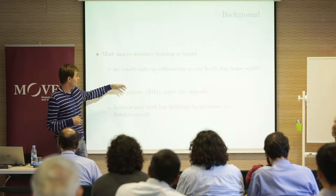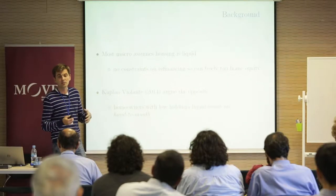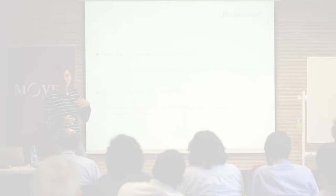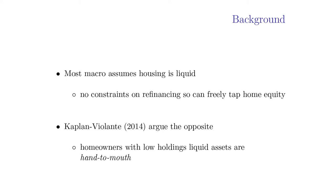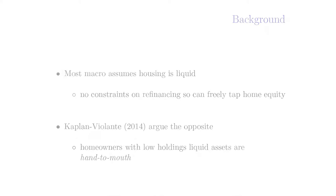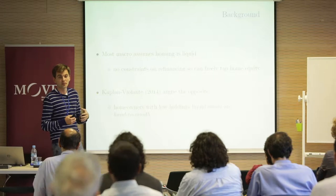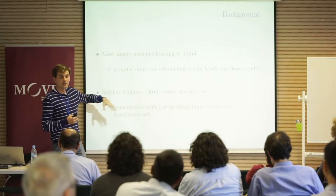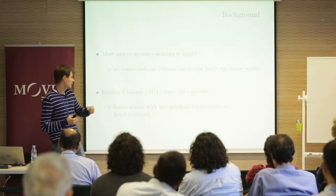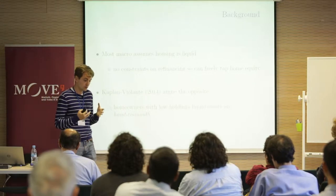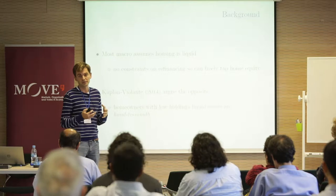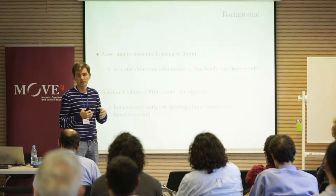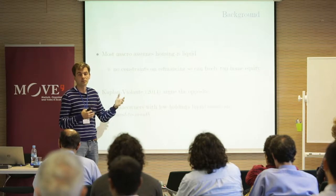Most macro assumes that housing is liquid — basically no refinancing restrictions. You can go ahead and borrow every period using your housing asset up to a limit, freely tapping into your home equity. Kaplan and Violante argue the opposite: households own this illiquid asset, and that's why a lot of these guys are going to be wealthy hand-to-mouth. Namely, if you give them one dollar, they'll consume it right away.